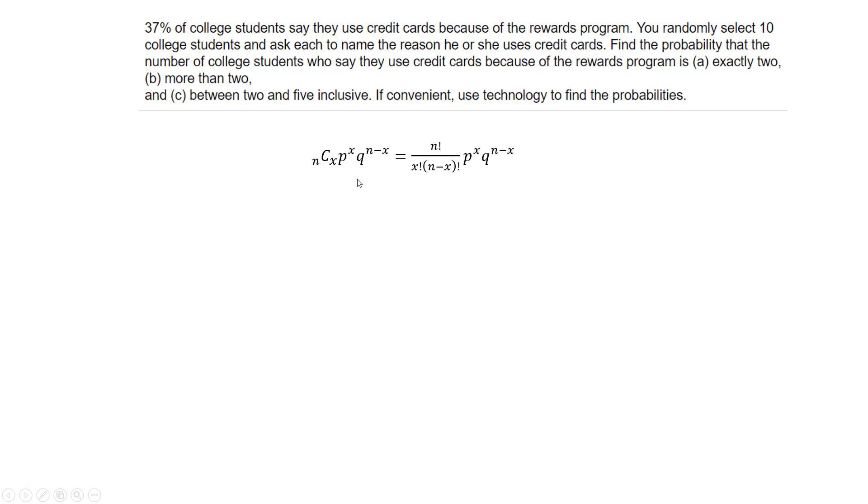If you want to work this out, the probability of exactly 2 is 10 combinations taken two at a time, probability of success 0.37 raised to the number of successes I'm looking for, which is 2, times the probability of failure.